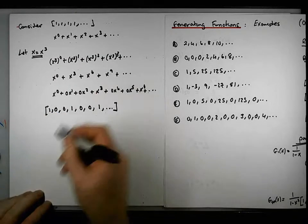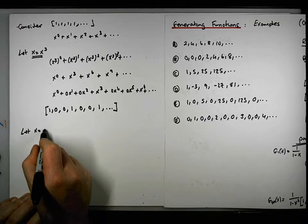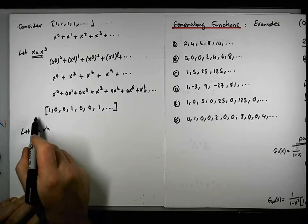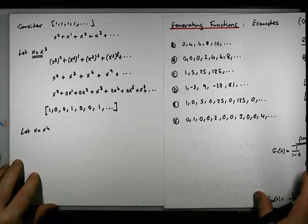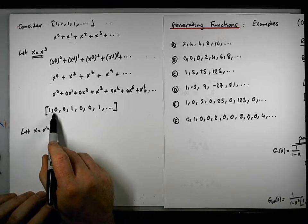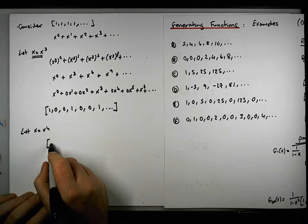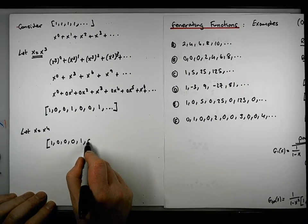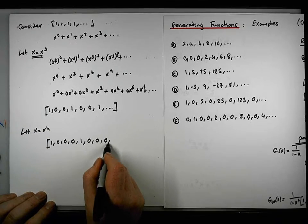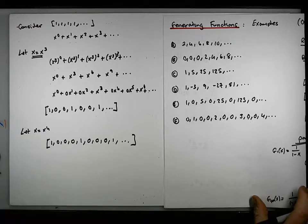The argument continues: for example, if we let x = x⁴, that will introduce three zeros, encoding the sequence 1, 0, 0, 0, 1, 0, 0, 0, 1, and so on. That's an important observation.